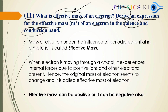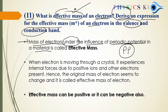First of all, what is effective mass? Very simple definition: it is the mass of an electron under the influence of a periodic potential. Under this influence, the electron mass is not constant — it can vary. In a crystal or material, electrons move through and experience internal forces.